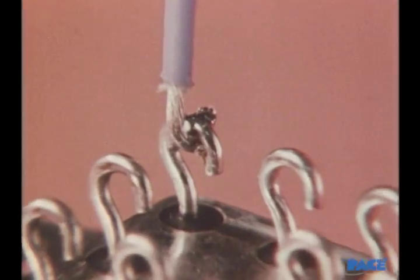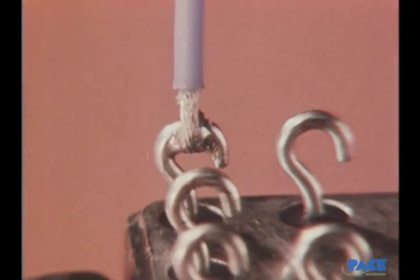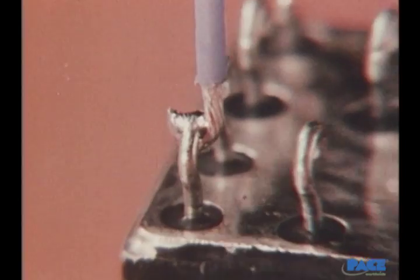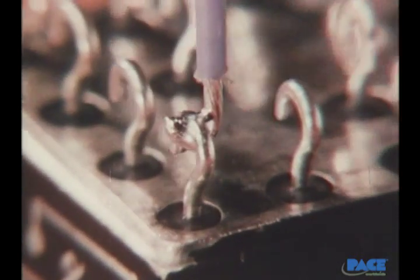The preferred joint has the characteristics we've seen before. Slightly concave fillets, a bright, shiny appearance, and evidence of good wetting.